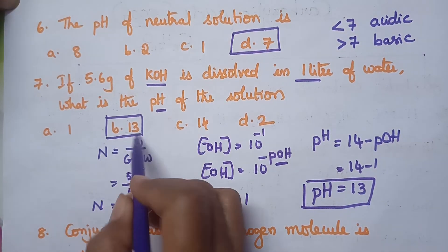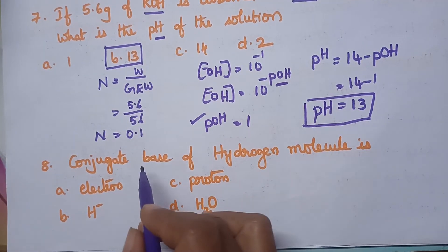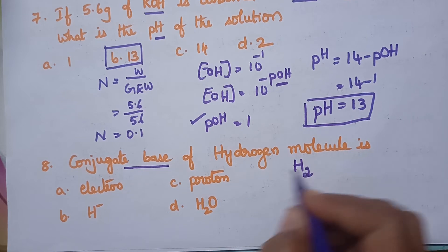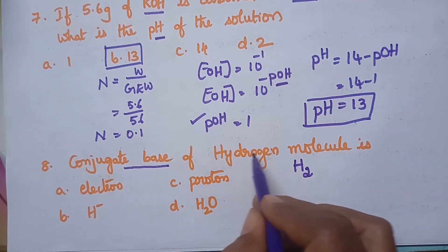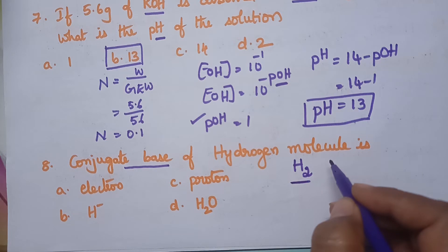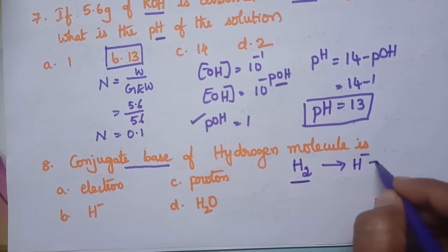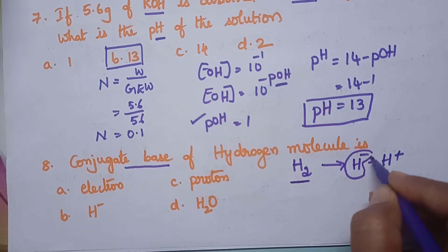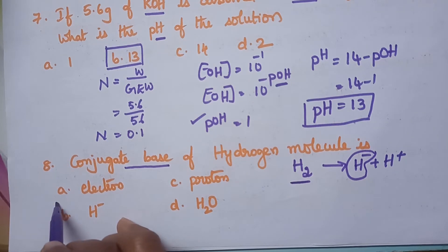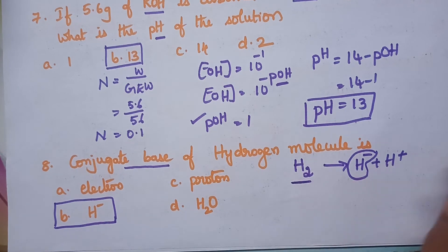So option B, pH = 13, is the right answer. For the next question: what is the conjugate base of the hydrogen molecule H2? The conjugate base of H2 means H2 is acting as an acid. An acid donates a proton, so H2 loses H⁺ and becomes H⁻ (hydride ion). So H⁻ is the conjugate base of H2. Option B, H⁻, is the right answer.